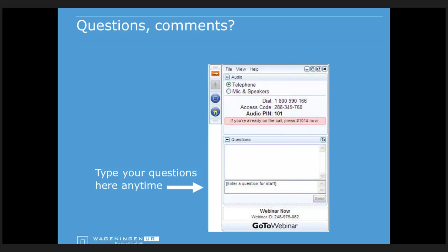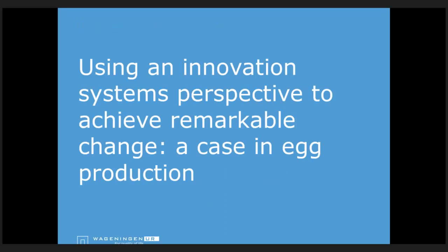Moving to a case study in egg production in the Netherlands. The starting point is some difficult pictures of dead animals - quite different from typical agricultural imagery. This represents the crisis that became the starting point for implementing a new way of working based on a system innovation approach.